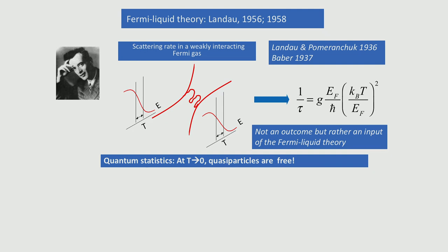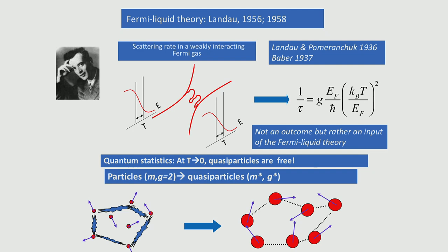I would like to emphasize that this is not really an outcome of Fermi liquid theory - this is an input. What you say is that by this argument, our quasiparticles in the Fermi liquid live for long times, because as you go to lower and lower temperatures the lifetime goes to infinity. Based on this argument, you say, well, now I'm going to treat them as free particles. So Fermi liquid theory is really a theory of free quasiparticles. It allows you to replace an ensemble of strongly interacting particles, such as helium-3 atoms or electrons in a solid, by an ensemble of essentially free particles but with different parameters - these particles tend to be heavier as a rule, and may have a different g-factor.